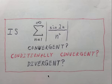So we're going to take the summation with the absolute value signs and work with that. Right now we want to ask the same question: is it convergent, conditionally convergent, or divergent?